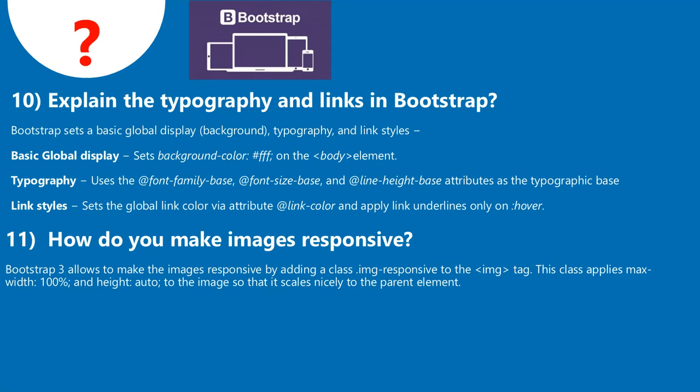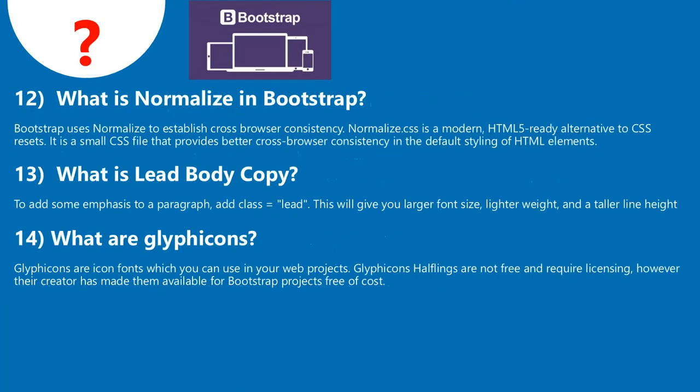Question 11: How do you make images responsive? Bootstrap 3 allows making images responsive by adding a class .img-responsive to the img tag. This class applies max-width: 100% and height: auto to the image so that it scales nicely to the parent element. Question 12: What is normalize in Bootstrap?